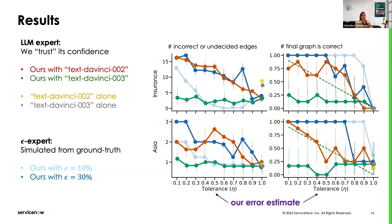Ideally, if our estimate is correct, all the points of a method should be above the diagonal marked with the dashed line. This is the case for the epsilon expert, because it is aligned with our assumptions. But it's not always the case with the LLM experts — in particular, with Text-DaVinci-3, you can see that we are way below the diagonal. This is because this LLM is overconfident, and as it is overconfident, our estimate is also distorted.